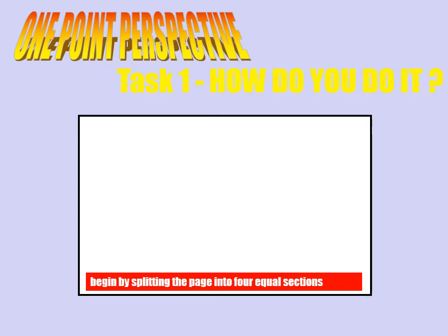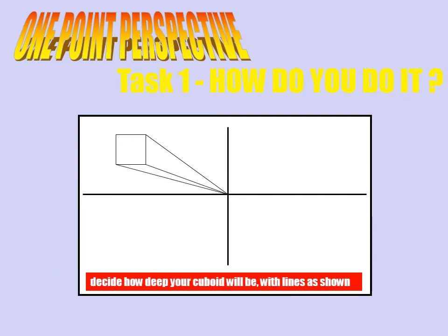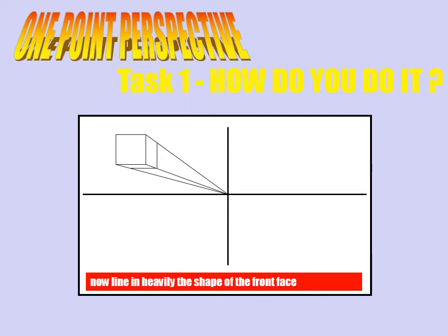So how do we do it? We're going to take a piece of A4 paper and split it into four equal sections. The easiest way to do this is just to fold it so that it is in equal sections. In the top left-hand corner, you're going to draw a box — roughly 30 by 30, but don't worry if that isn't your exact size. Now you're going to take faint lines from the three corners of the cube to the vanishing point as shown. Then we're going to decide upon how deep the cuboid will be, with a vertical line and a horizontal line. And then we're going to darken in the rest of it so that it stands out.